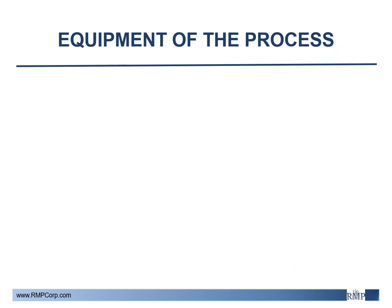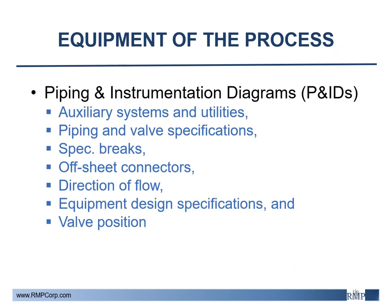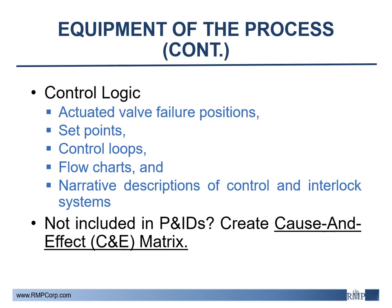Moving along to section 3, equipment of the process, piping and instrumentation diagrams or P&IDs are essential for all elements of Nevada CAP. These are one of the most referenced documents and should be correct and sufficient to ensure their successful use. This includes showing auxiliary systems and utilities, piping and valve specifications, and spec breaks. P&IDs also depict the control logic of the system with actuated valve failure positions, set points, and control loops. If not documented in the P&ID sufficiently, other documentation for control logic should be created, such as a cause and effect matrix — diagrams that document all control logic, set points, and associated actions with each control loop.